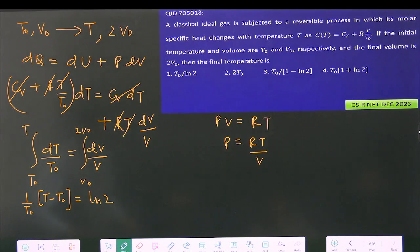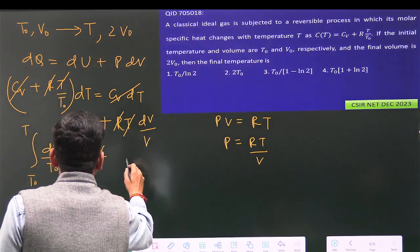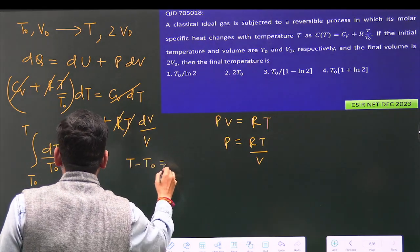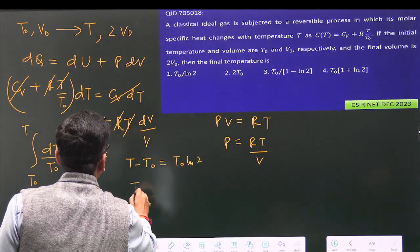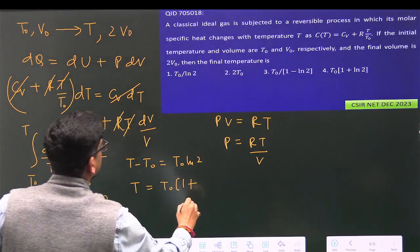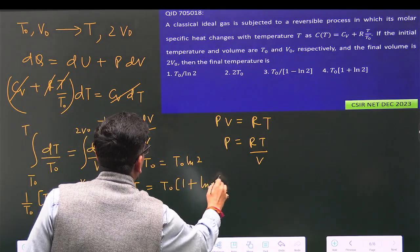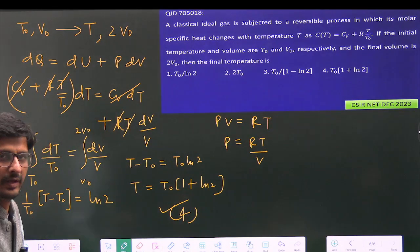So this will become T - T₀ = T₀ ln 2, which means T = T₀(1 + ln 2). So you can see option number 4 is correct.